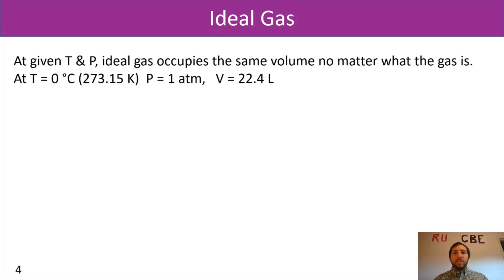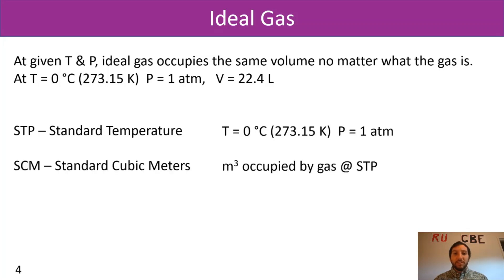When you deal with an ideal gas, there's a couple of abbreviations that are good to be familiar with. There's STP, which is our standard temperature and pressure. So that's T equals zero degrees Celsius, pressure is one ATM. There's also SCM, which is our standard cubic meters. So it's the meter cubed occupied by a gas at STP. And then we also have SCF, which is our standard cubic feet. It's our feet cubed occupied by a gas at STP. So now that we've established this ideal gas law, we can now manipulate it a little bit.